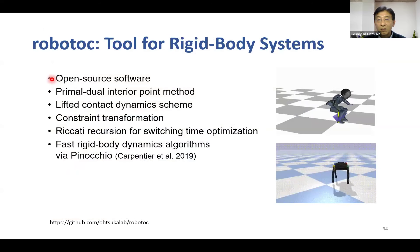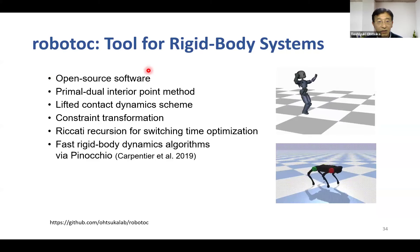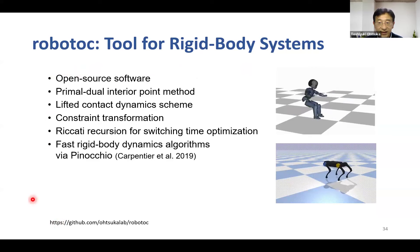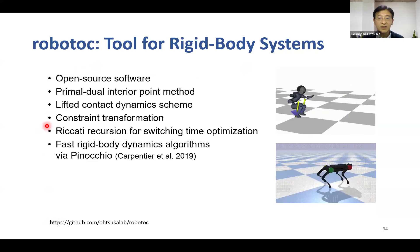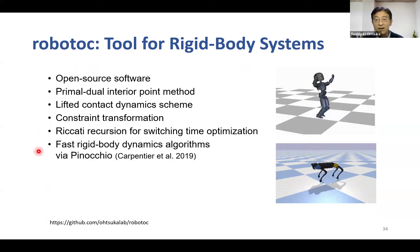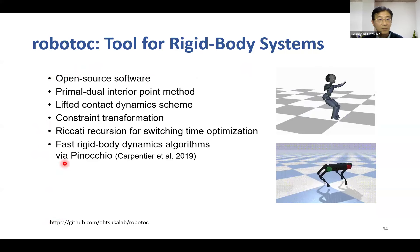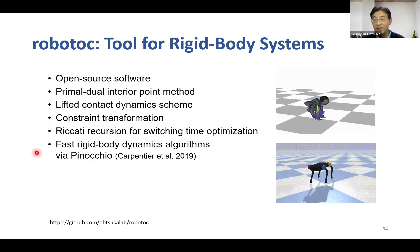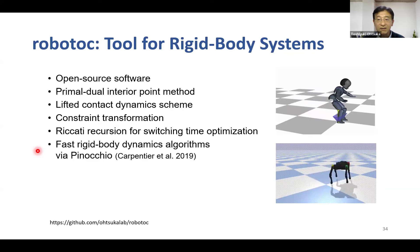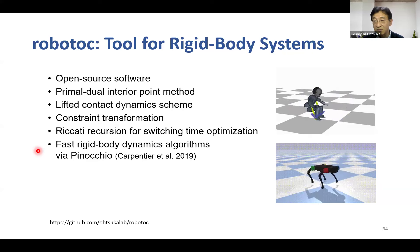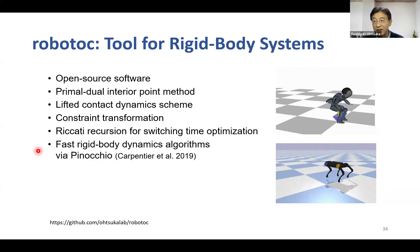We developed an open-source software for NMPC of robotic systems called RoboTalk, available on GitHub. This is a specialized tool for robotic systems. An important component is the Pinocchio library for rigid body dynamics algorithms, which efficiently computes forward dynamics, inverse dynamics, and their sensitivities by exploiting special structures in robotic system dynamics. If you describe the robot model in URDF format, RoboTalk defines a fast solver for NMPC of the robot with specified contact patterns.